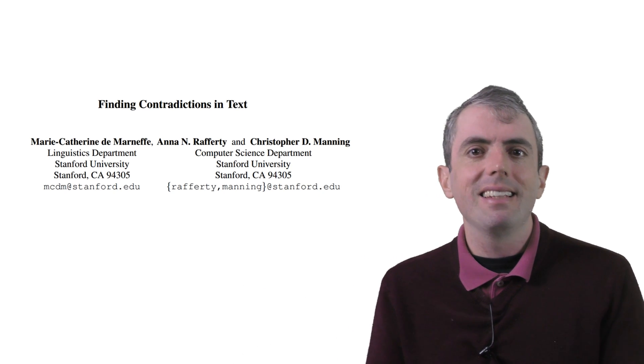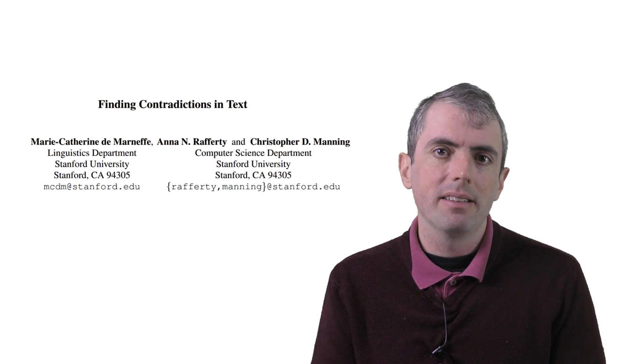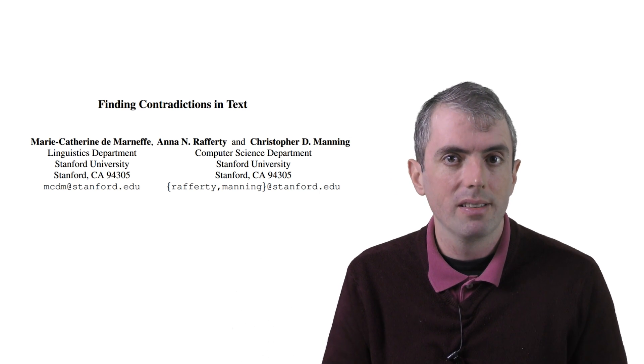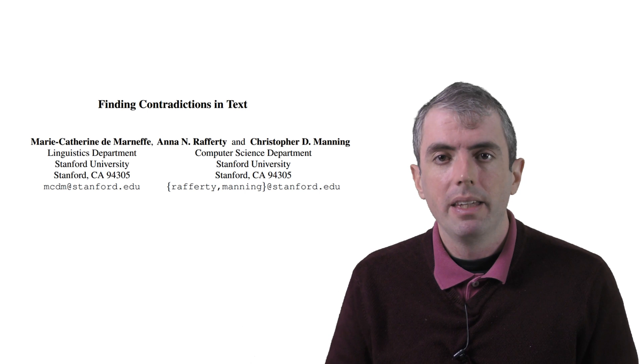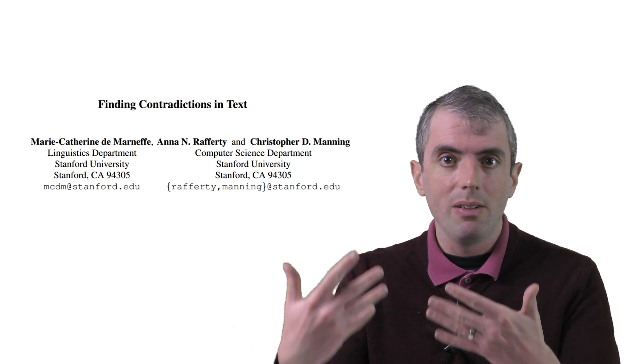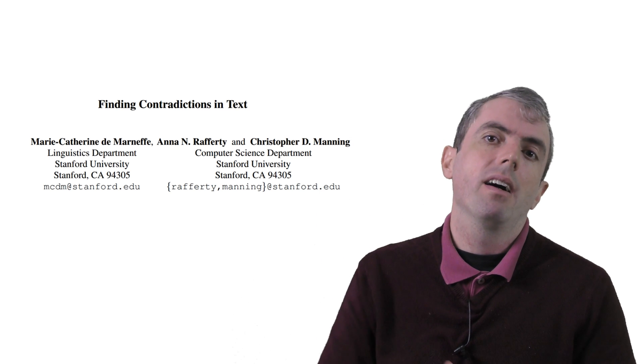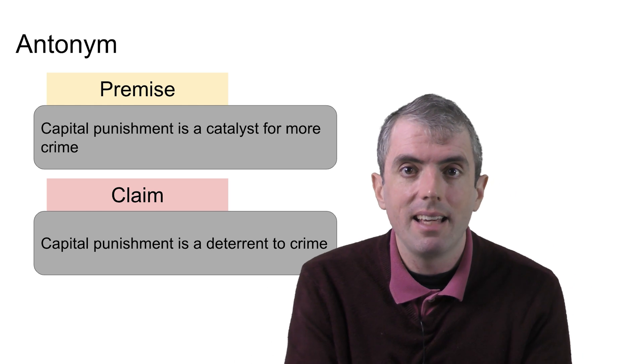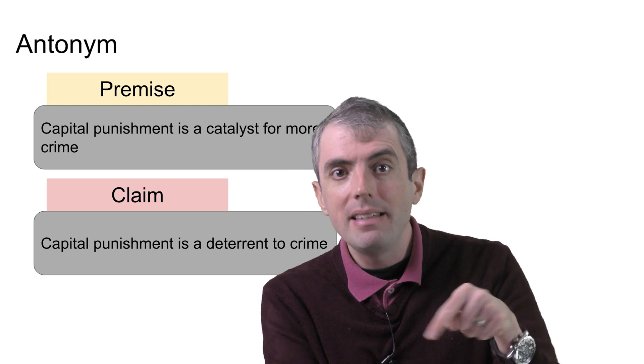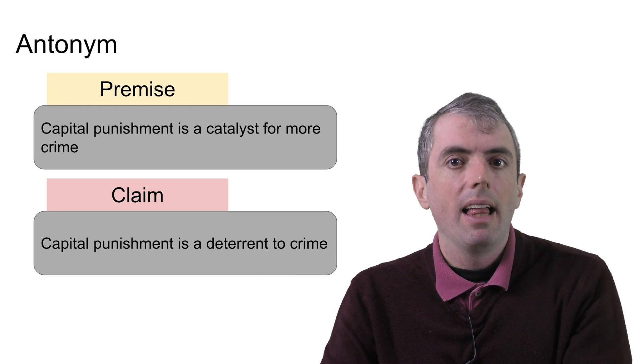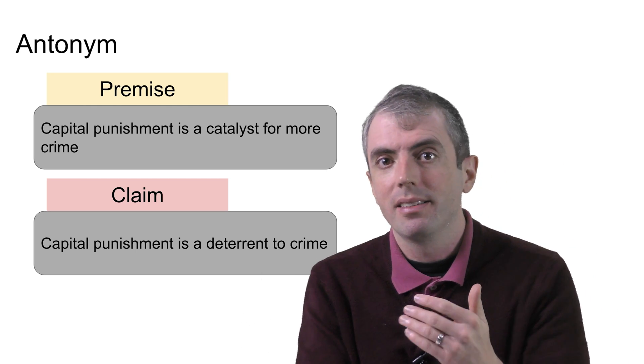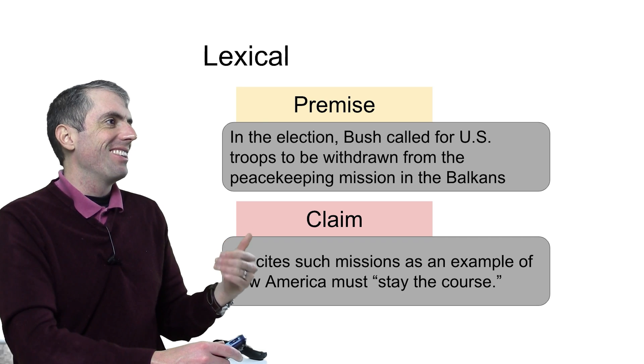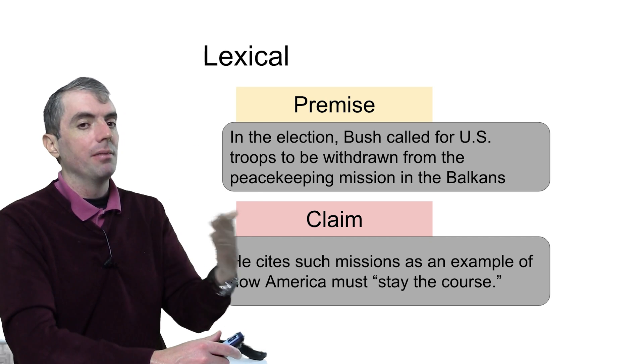So why is this an interesting problem in natural language processing? DeMarnef et al. have an ontology of how these NLP problems can be contradictions that show the breadth of the problem. Let's go through a couple of examples of how a claim could be contradicted by the premise. First, you need to know what words mean. In this example, you need to know that a catalyst means that you're going to have more of something. That means that it contradicts deterrent. And it's not just single words and their opposite. You need to know that stay the course is the opposite of withdrawal.